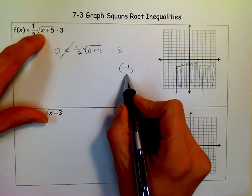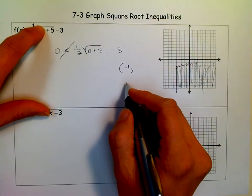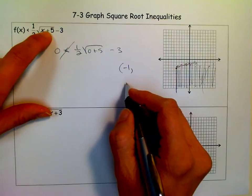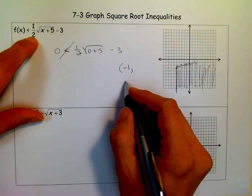If I put a negative 1 in for x. Why I pick negative 1 is because when I add it to 5, I'm going to get a 4. And when I take the square root of 4, I get a 2. So this part would be 2 when I put a negative 1 in. And half of 2 is 1.